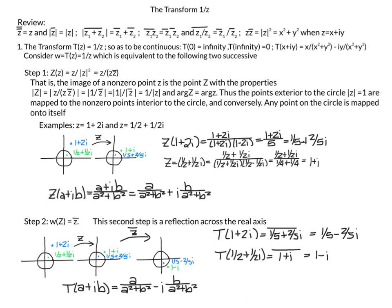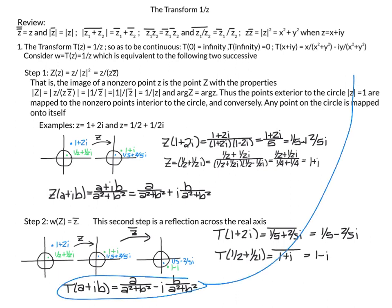So t of (1 plus 2i) equals the complex conjugate of (1/5 plus 2/5 i), which equals 1/5 minus 2/5 i. And t of (1/2 plus 1/2 i) equals the complex conjugate of (1 plus i), which is 1 minus i. Therefore, t of (a plus ib) equals a over (a squared plus b squared) minus i times b over (a squared plus b squared), which is the formula noted on the overview sheet.